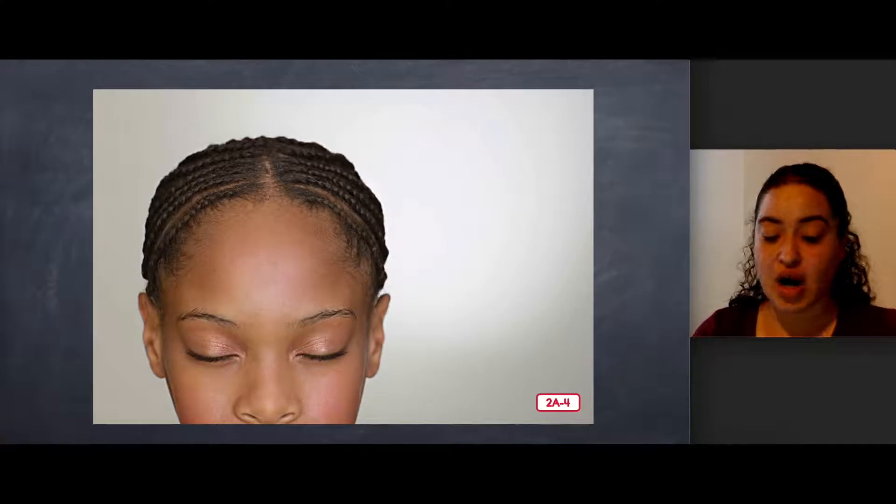Your eyelids are little pieces of skin that come down and cover your eyeballs when you close your eyes or blink. Even when you are not trying to, your eyes blink automatically every few seconds in order to keep your eyeballs moist.